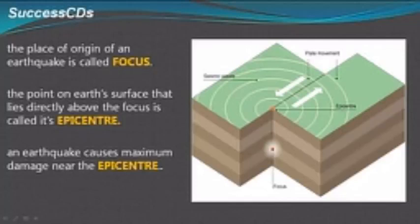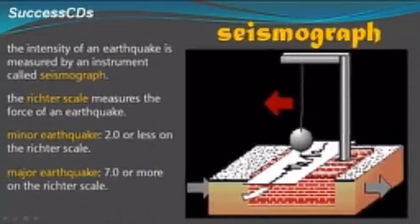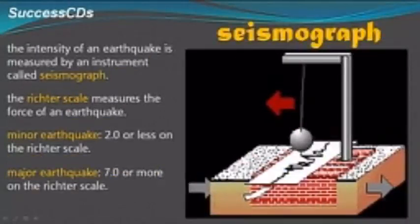If we have a reading of 2 or less on the Richter scale, then it is called minor earthquake. But if the reading of Richter scale is 7 or more than 7, then it is called the major earthquake.